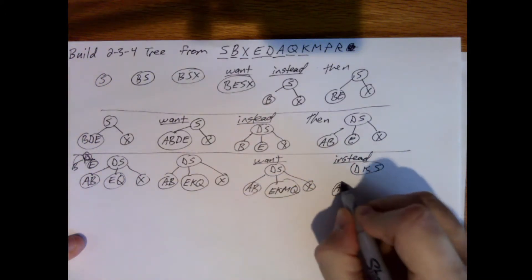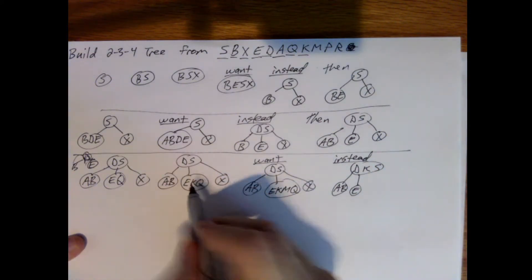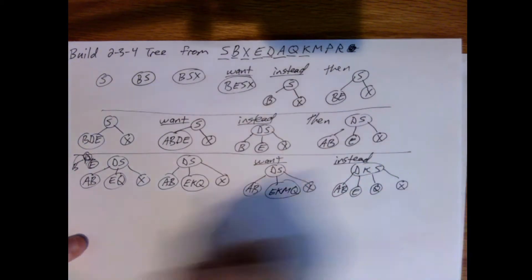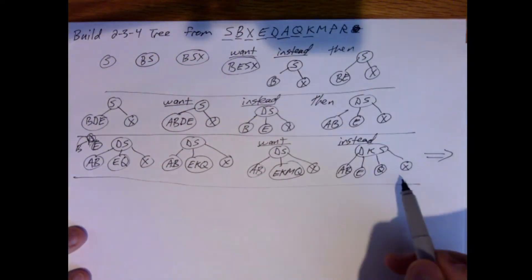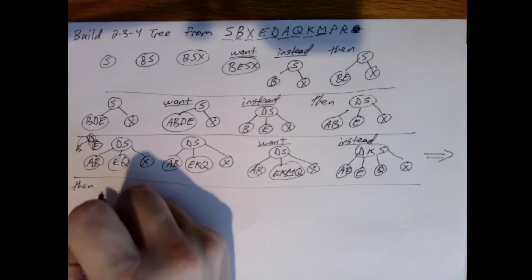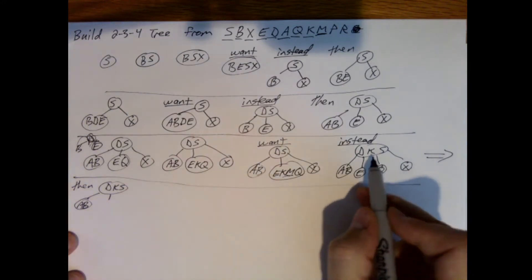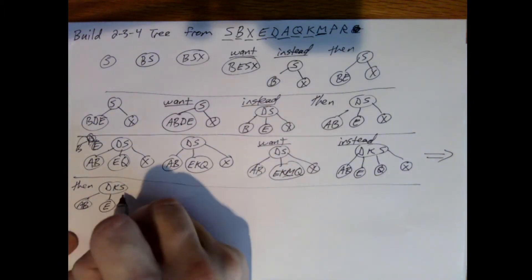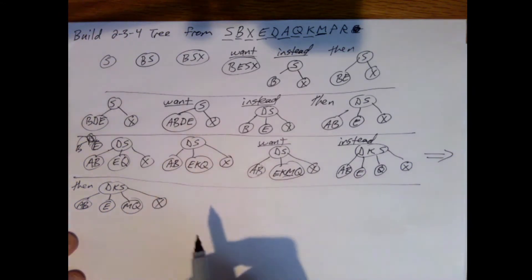A, B is still less than D. E is before K. Q is after K. And X is still after S. So now I'm going to add the M that we were trying to add. So where does M go? After K, but before S, so it's in here.